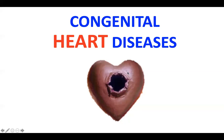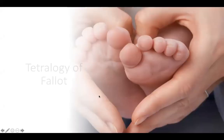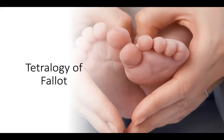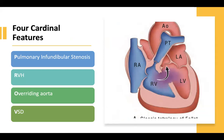Let us proceed with the next congenital heart disease, which is a sure ball in any exam — Tetralogy of Fallot. The first thing every student must know is the four cardinal features: pulmonary stenosis or pulmonary infundibular stenosis, right ventricular hypertrophy, overriding aorta, and VSD. Memorize that.